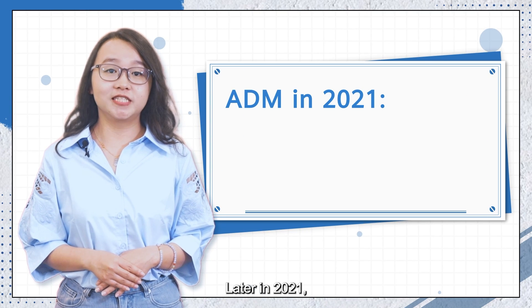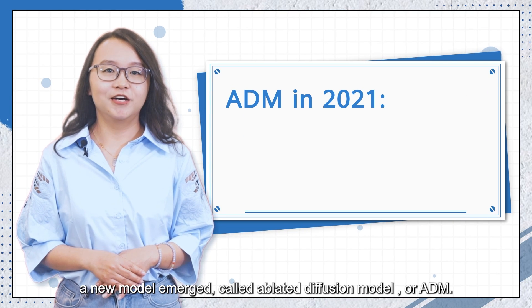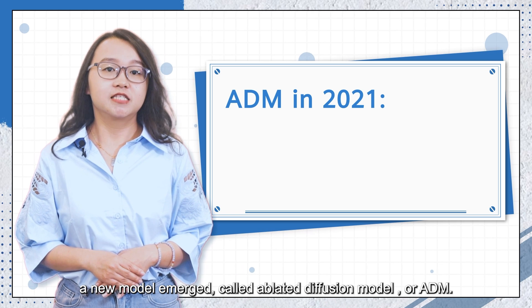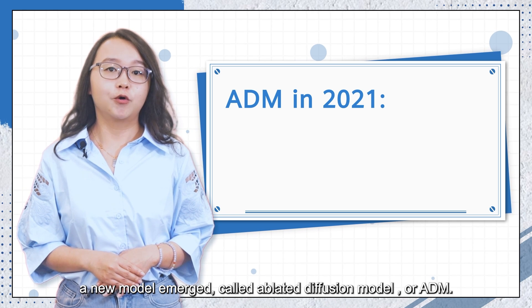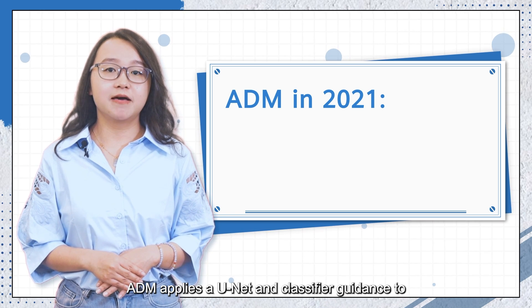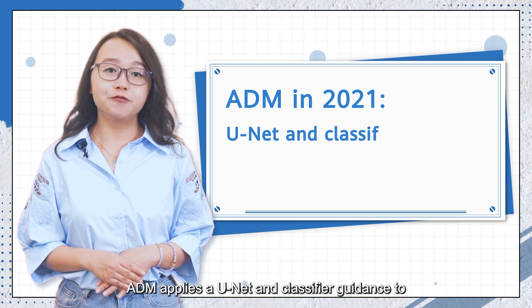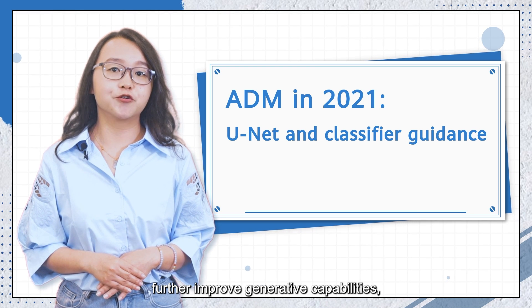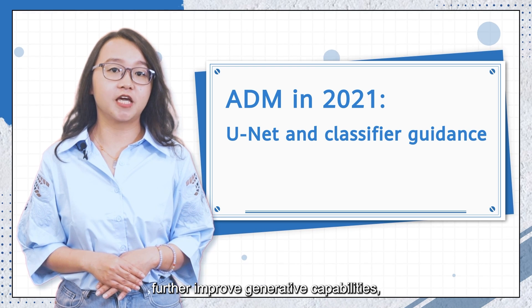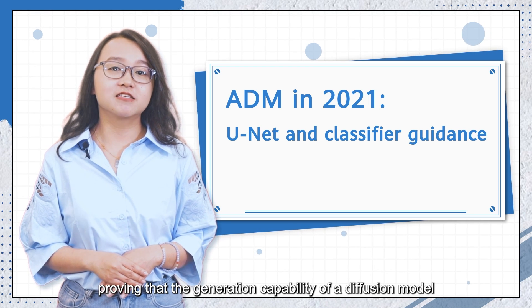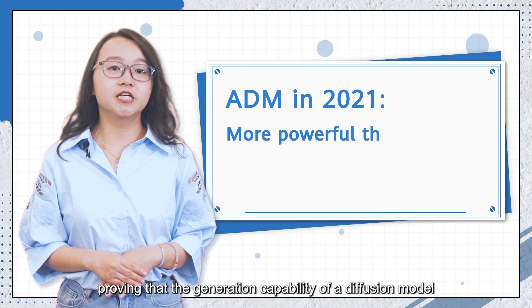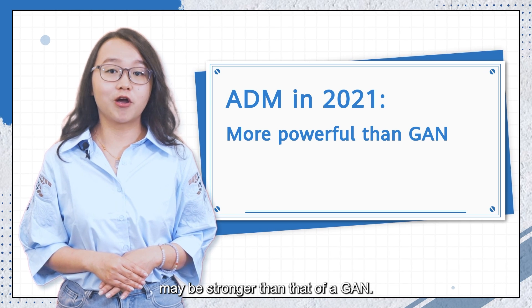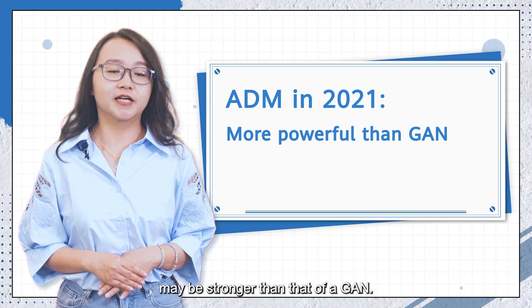Later in 2021, a new model emerged called the Ablated Diffusion Model, or ADM. ADM applies a UNET and classifier guidance to further improve generative capabilities, proving that the generation capability of a diffusion model may be stronger than that of a GAN.